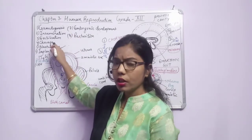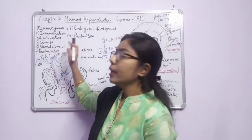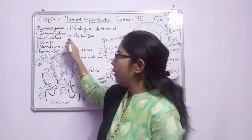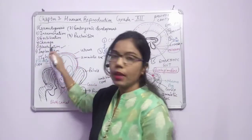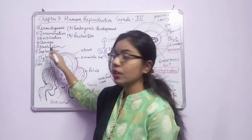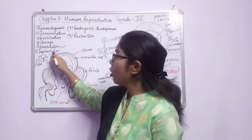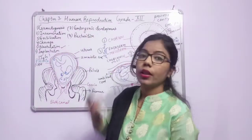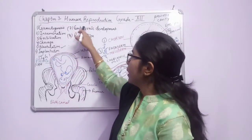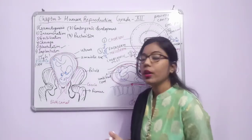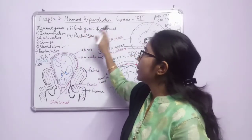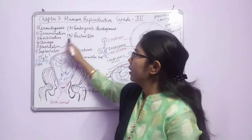After fertilization, there will be cleavage or division in the zygote, which will ultimately transform into different stages. Cleavage leads to morula, and after morula it forms blastula — this is known as blastulation. Then implantation takes place into the endometrium wall, followed by embryonic development where it divides into a multicellular structure known as the embryo.